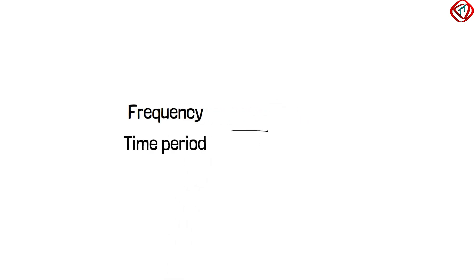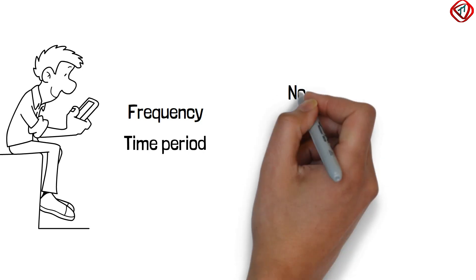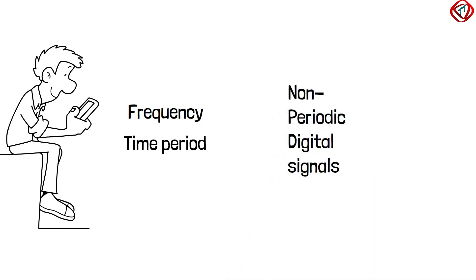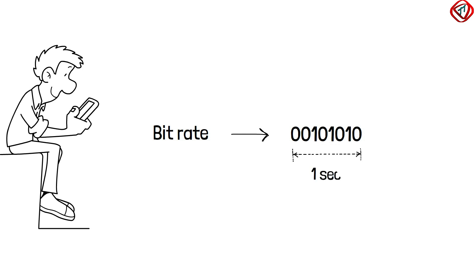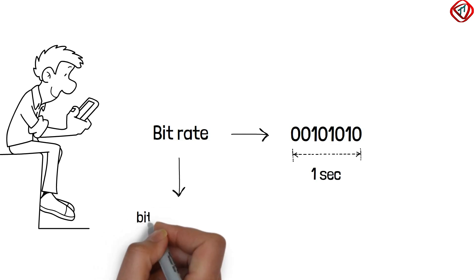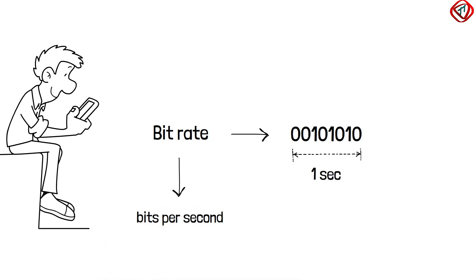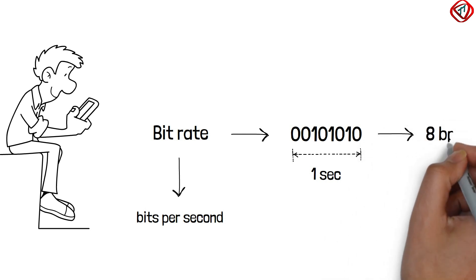The parameters like frequency and time period deal with periodic signals. However, in data communication, we deal with non-periodic digital signals. Hence, instead of frequency or time period, we use the term bitrate for digital signals. Bitrate is defined as the number of bits sent in 1 second. It is measured in bits per second or BPS. In this example, 8 bits are sent in 1 second, so the bitrate is 8 BPS.